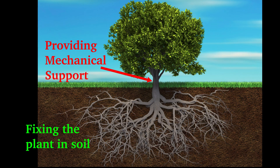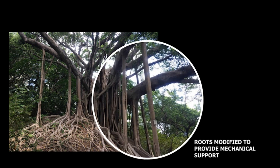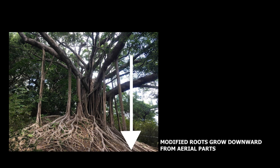One of the basic purposes of roots is to fix the plant in the soil, and the stem provides mechanical support. But in some plants, roots get modified to provide mechanical support. In this video, we will discuss some modifications in roots to provide mechanical support to the plant. Generally, support-providing modified roots grow downward from the aerial part of the plant.